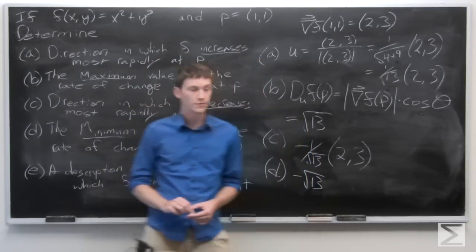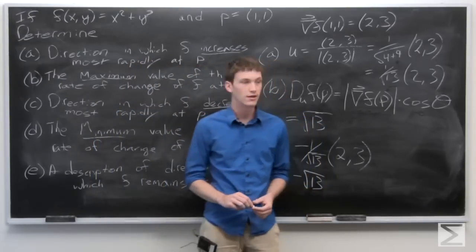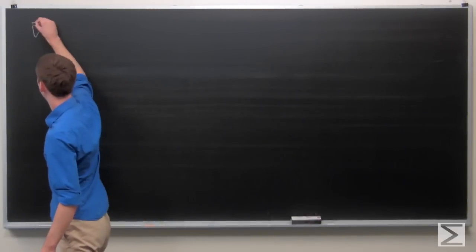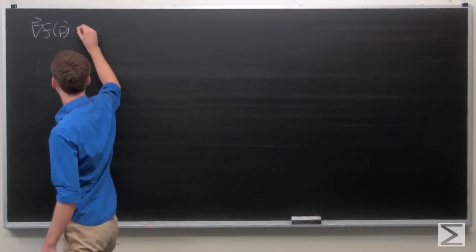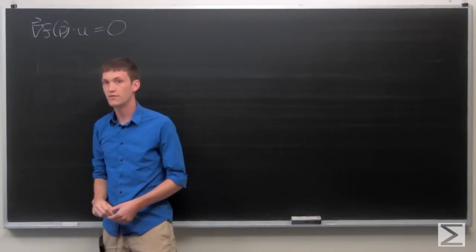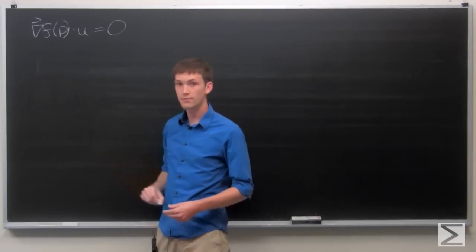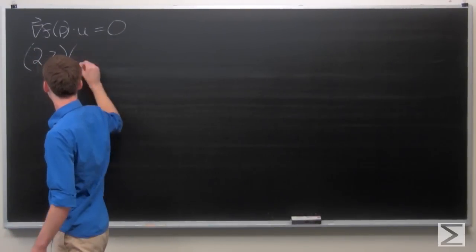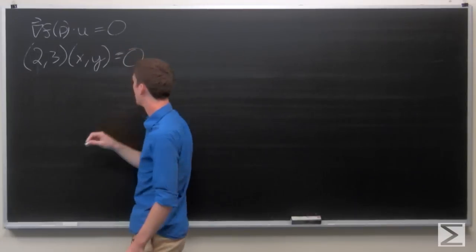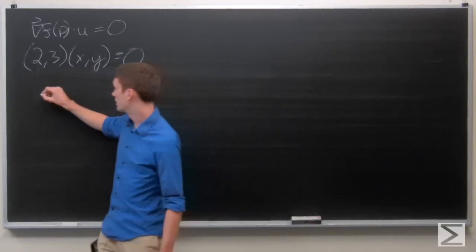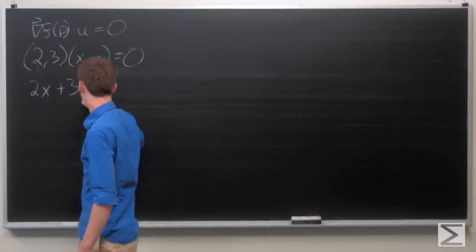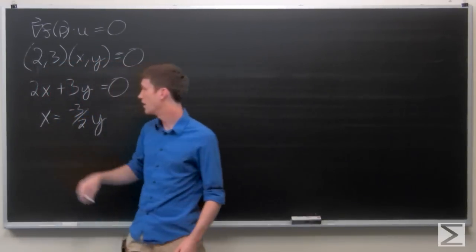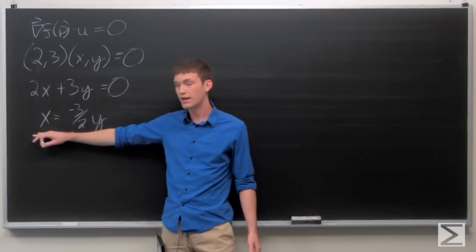For part e, we're going to find a description of the directions in which f remains constant. We want to find the values in which the directional derivative is equal to 0. We set u equal to some arbitrary vector ⟨x, y⟩. We know that the gradient vector of f at p is ⟨2, 3⟩. Taking the dot product and solving for x or y, we find that x is equal to negative 3/2 times y.